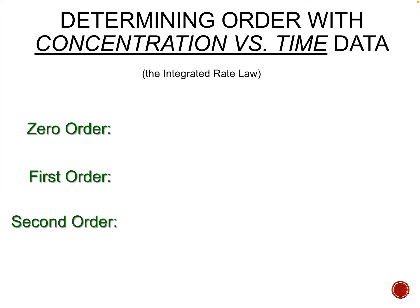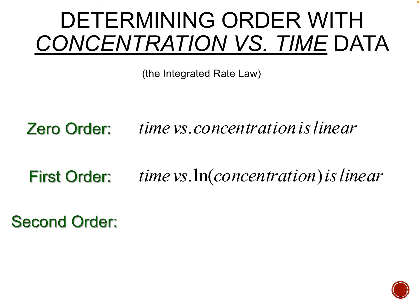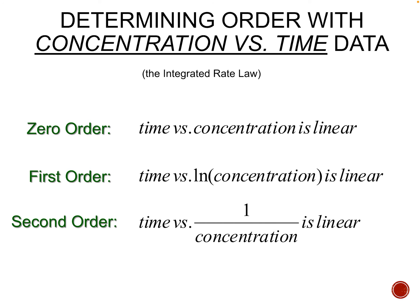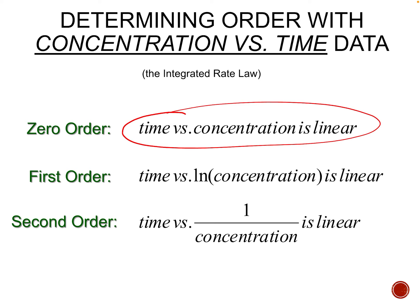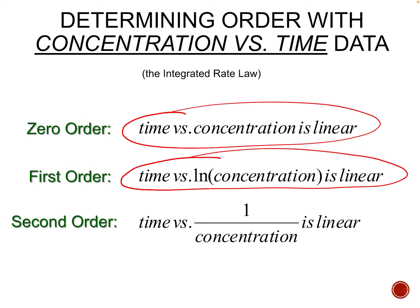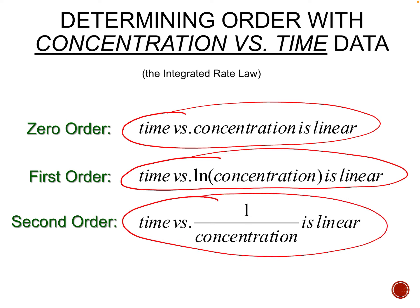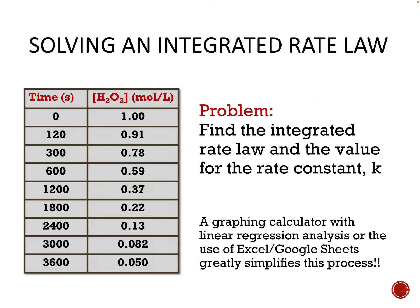Here are all of our integrated rate laws summarized. For zero-order, time versus concentration is linear. For first-order, time versus the natural log of concentration is linear. For second-order, time versus 1 over concentration is linear. When you do an experiment, you collect time versus concentration data. Plot it — does it give you a straight line? If not, take the natural log of all concentrations and plot versus time. If still not linear, take 1 over all concentrations and plot versus time. Whichever gives a straight line tells you the order.